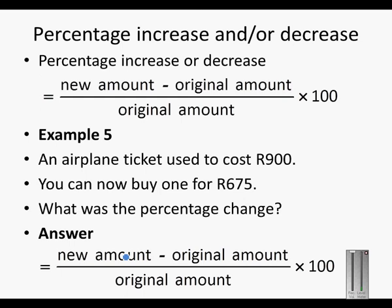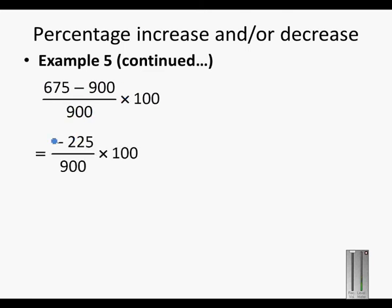So the new amount minus the original amount, divided by the original amount, times 100. Remember it used to cost 900 rand, it is now 675. So we take 675, minus 900, divided by 900. We get minus 225 divided by 900.